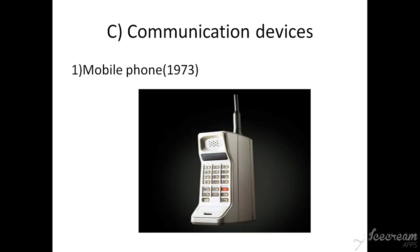The third type of handheld devices is communication devices. The first category is the mobile phone, introduced around 1973. Mobile phones belonging to the Global System for Mobile Communications (GSM) network became capable of sending and receiving text messages. A mobile phone with advanced features similar to a computer is called a smartphone, while a regular mobile phone is known as a feature phone.